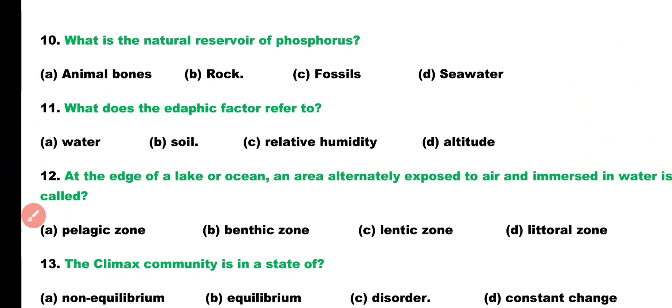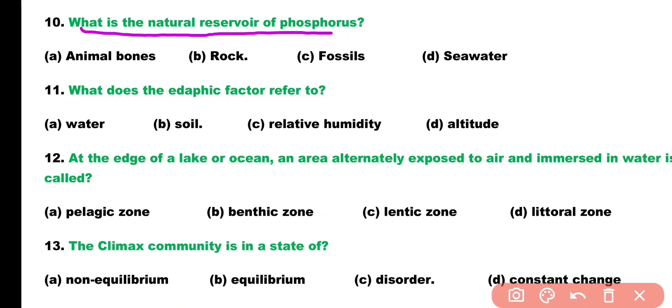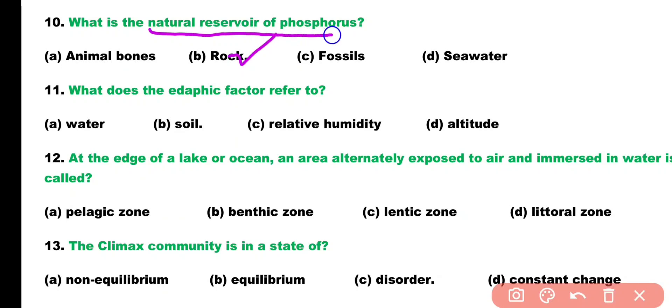Question number ten. What is the natural reservoir of phosphorus? Options: animal bones, rocks, fossils, or sea water? Correct answer is option B. Rocks are the natural reservoir of phosphorus.